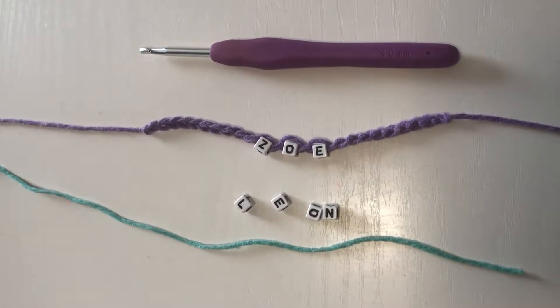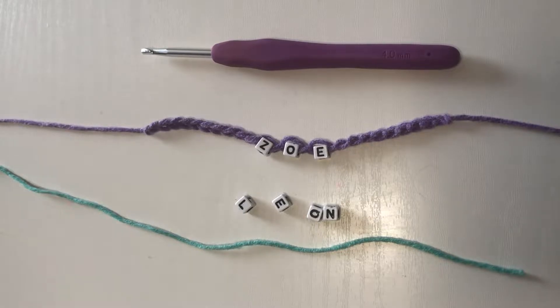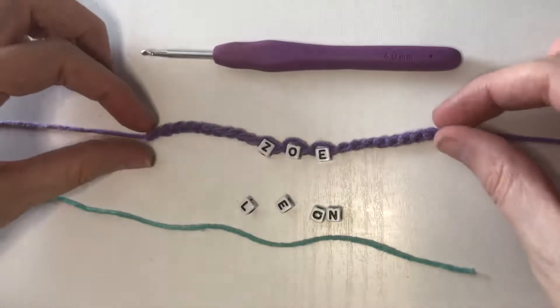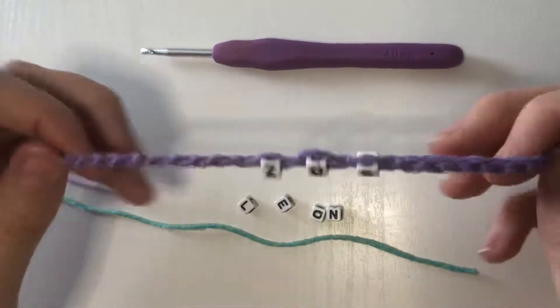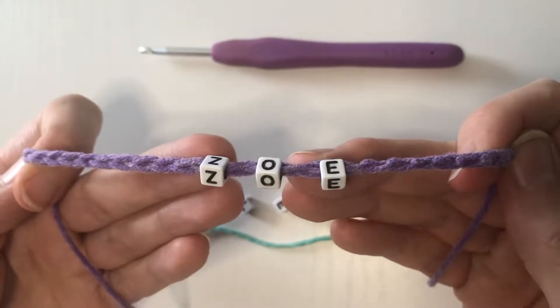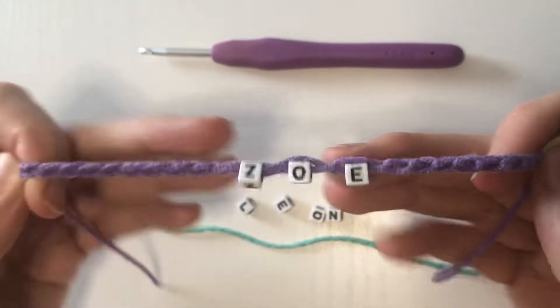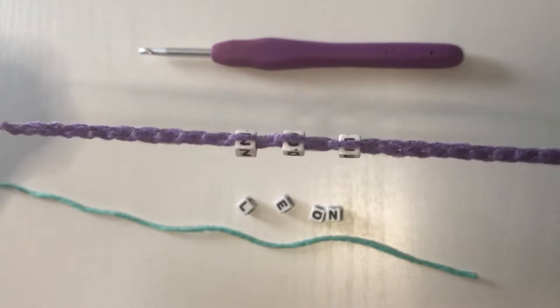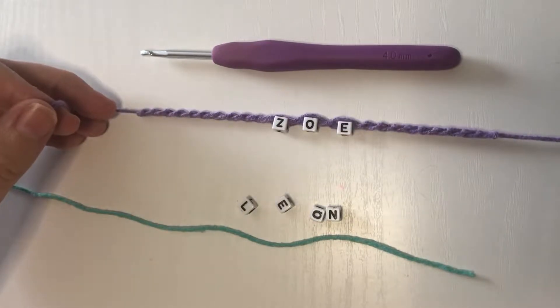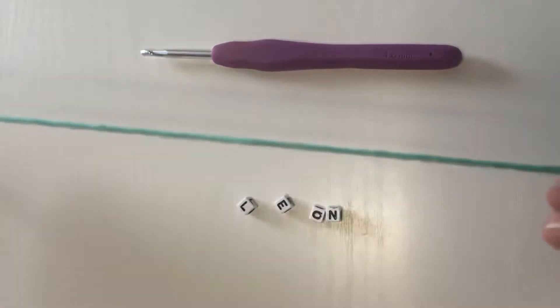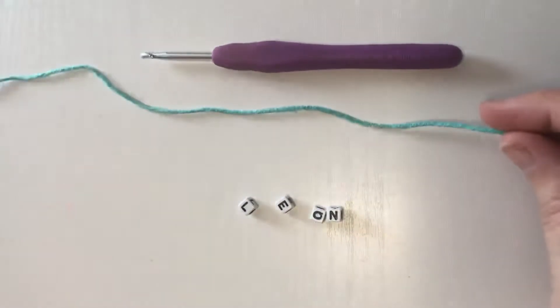Hi Zoe, here's a little video to show you how to make your chained bracelets but this time with beads in them. I've already made you this one, this one's coming your way, and I thought I would show you how to make one for your brother. What you need is some yarn, a crochet hook, scissors, and beads.